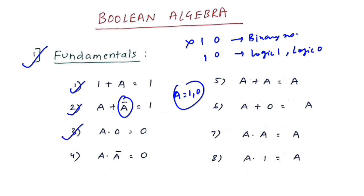Point three: A · 0 = 0 — that is basic. Point four: A · Ā = 0, because if A is one then its complement is zero, and if A is zero then its complement is one, so 1·0 or 0·1 both give zero.